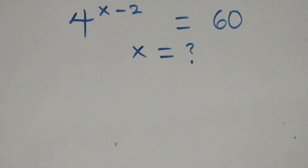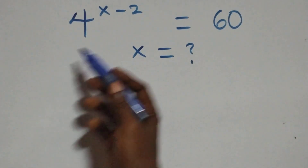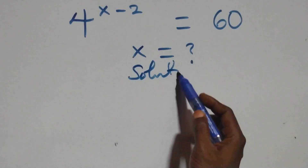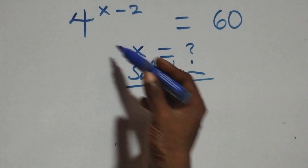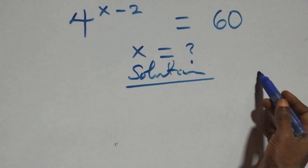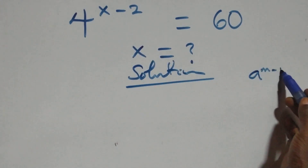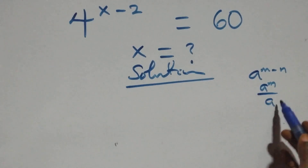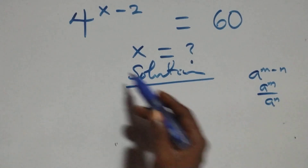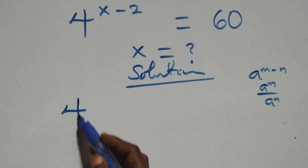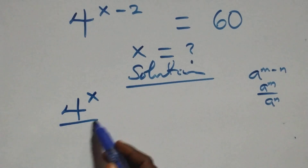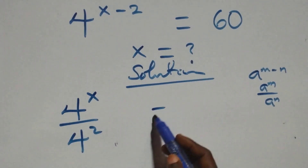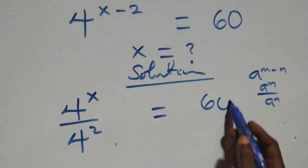Hello, you are welcome. Today we solve this exponential equation. This follows when we have a raised to power n minus n, which equals a raised to power n over a raised to power n. Here we have four raised to power x over four squared, and that equals sixty.